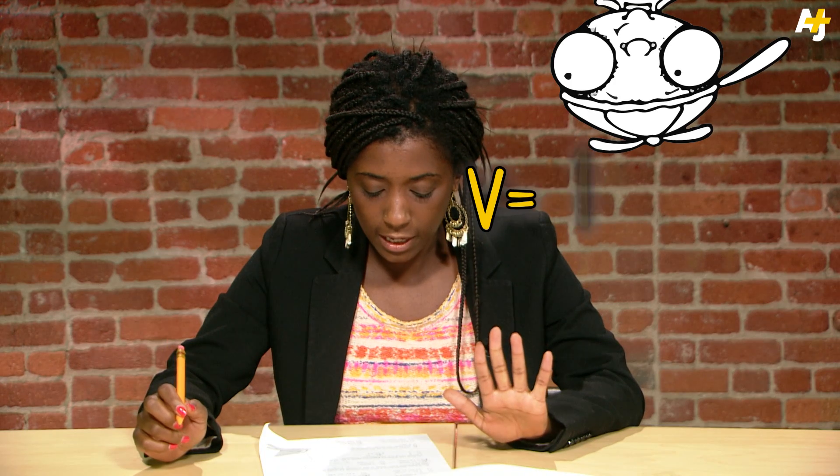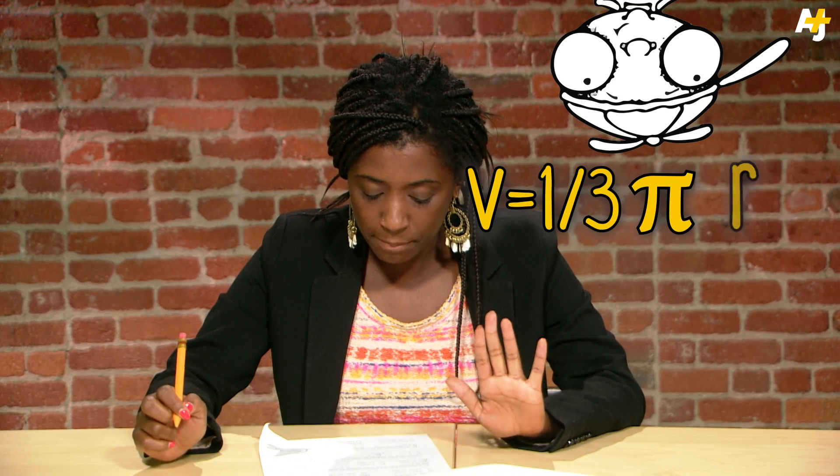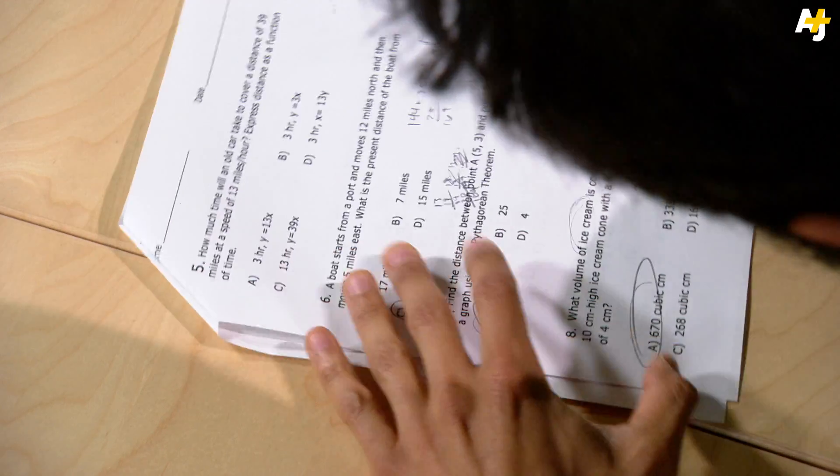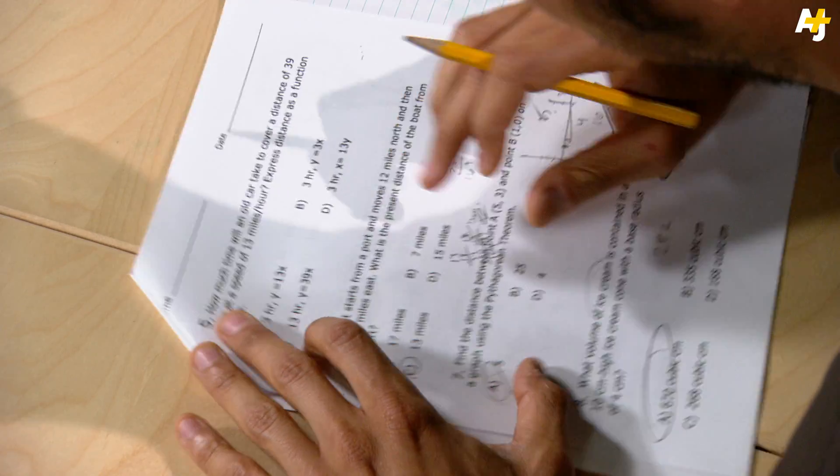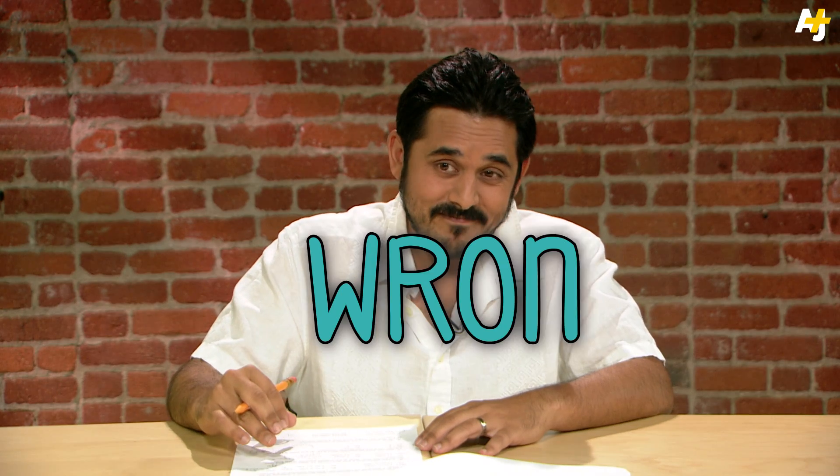What volume of ice cream is contained in a 10 centimeter high ice cream cone with a base radius of 4? I don't remember the volume of a cone, if that's what this is asking me. So this is like V equals half of B and H or something like that. I think it's time for a B. I'm gonna go with number A. I felt good about it, but see? Study kids, stay in school.